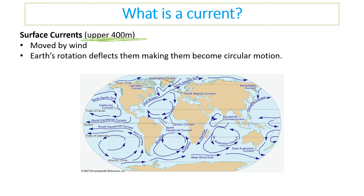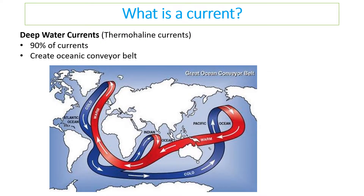Surface currents are generally affected by the wind and the Earth's rotation. The wind will drive water in a certain direction — for example, there's often a Gulf Stream of wind heading across the Atlantic. The Earth's rotation also causes some water to move in a circular motion as well.